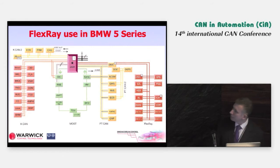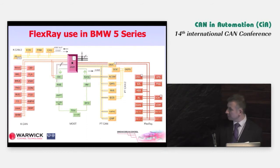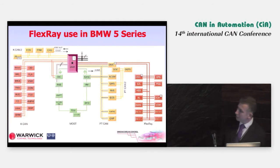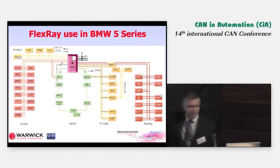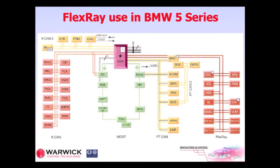Moving on to another step from the X5, this is the architecture for the 5 Series BMW. BMW have adopted this technology quite significantly. You can see there's a lot of CAN, MOST, and FlexRay with more ECUs adopted — maybe 10 or 12 ECUs there. So it's quite a big difference.